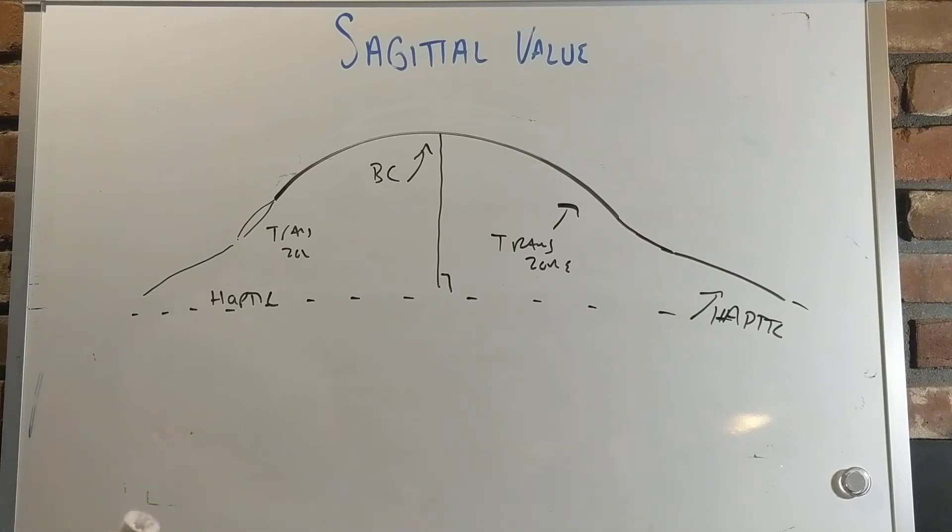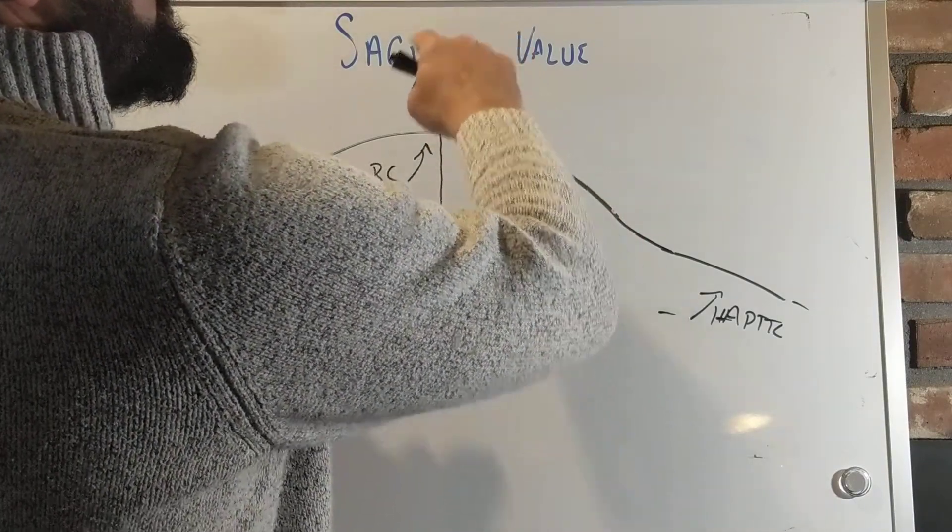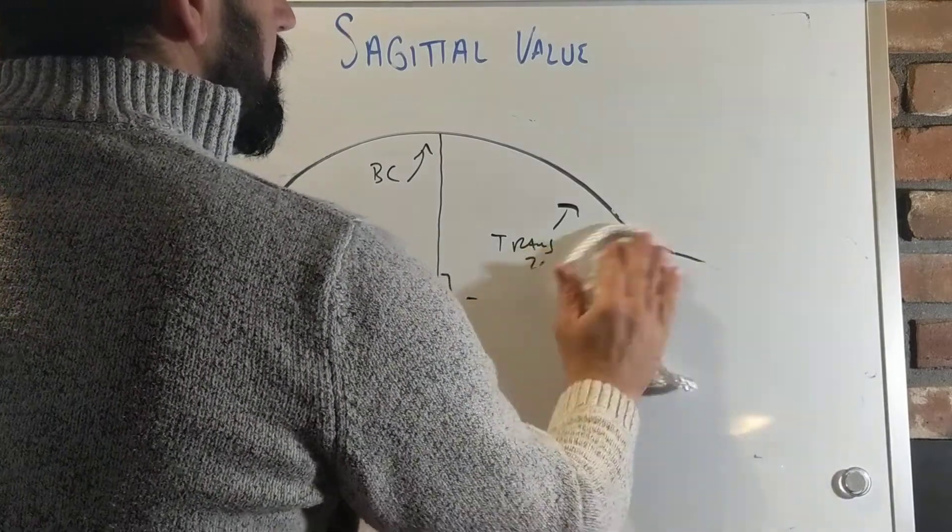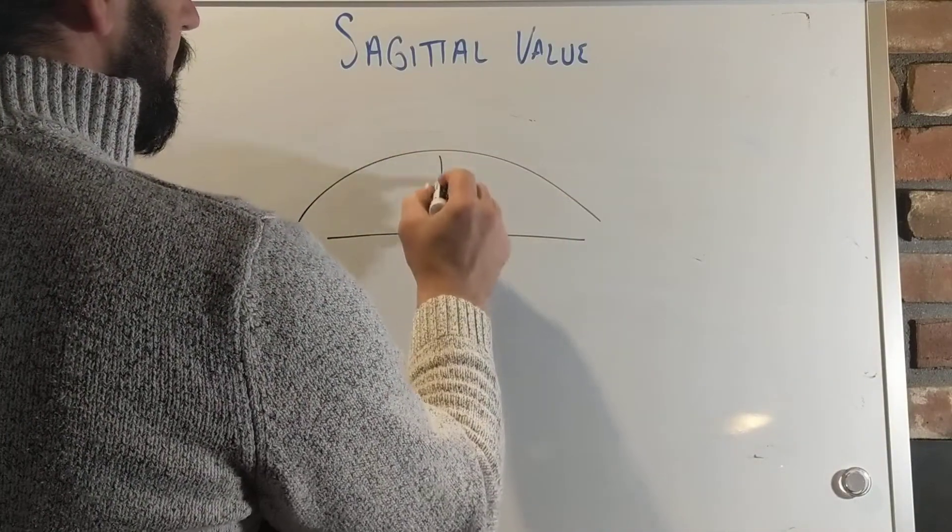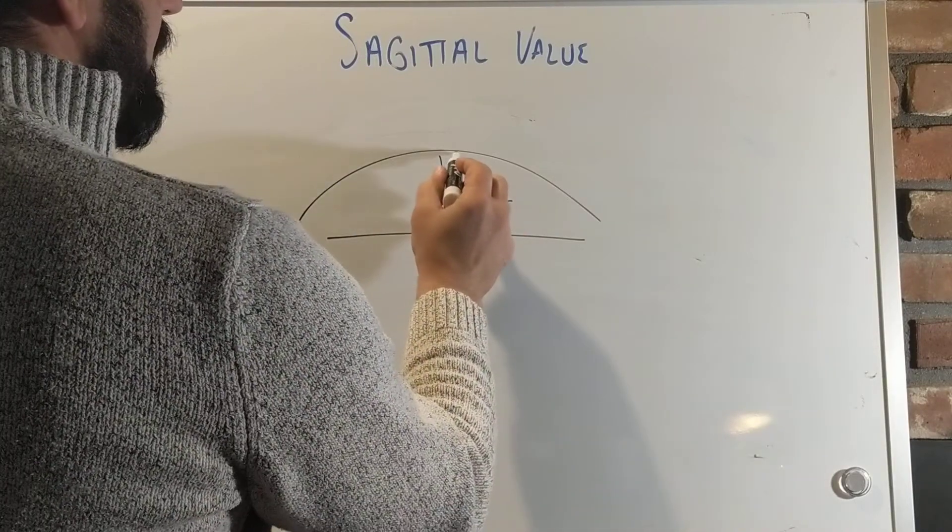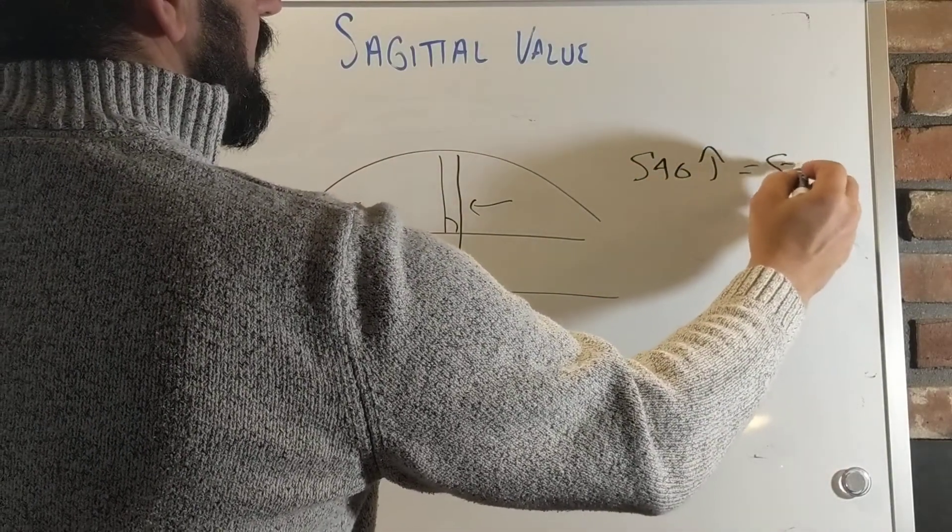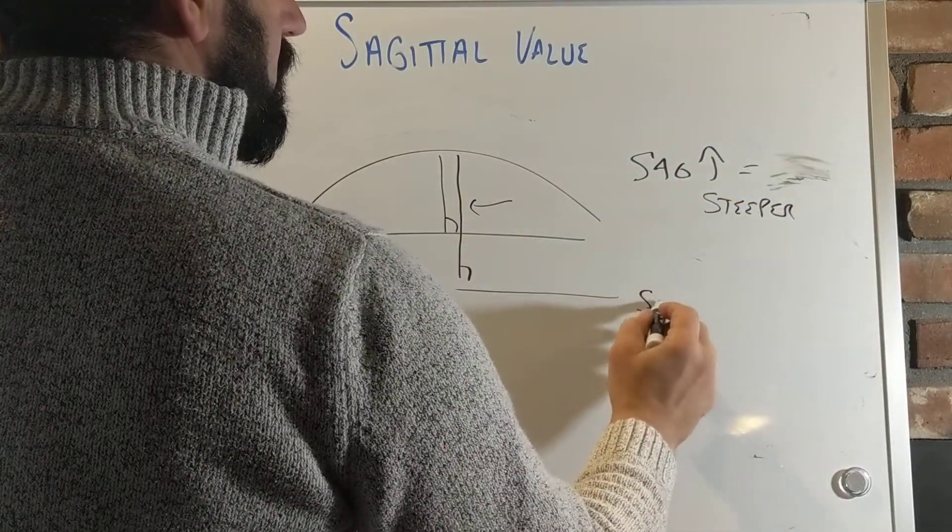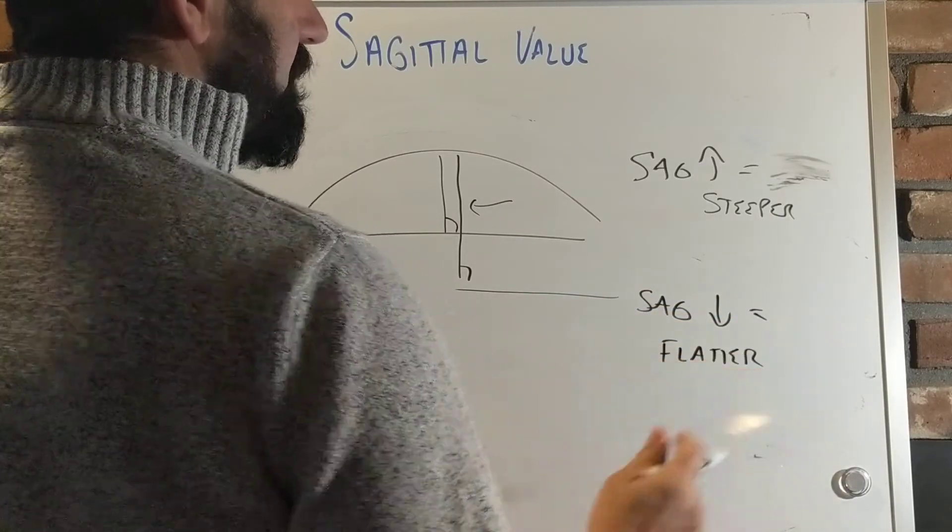And by the same token, if I start typing in numbers where the diameter stays the same, but the radius gets smaller, it's going to be steeper. If I get the radius to be bigger, and I really want you to play with that calculator a little bit to see what the sagittal value is. And the end result is, if you remember nothing else from today's lecture, is if I have any number here and any combination, the sagittal value, if I make the sagittal value deeper, it's going to cause the lens to fit steeper. If I make the sagittal value or the depth smaller, it's going to effectively make the lens fit flatter as well.